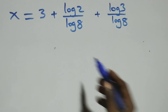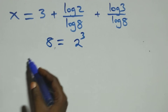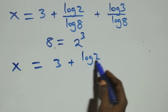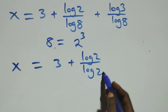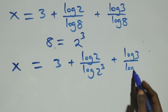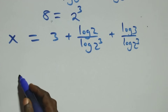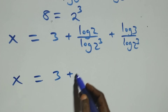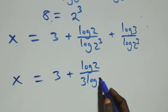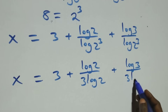Then, next step here, we can write 8 as 2 times 2 times 2, which is 2 cubed. And what we have becomes x equals 3 plus log 2 over log 2 cubed plus log 3 over log 2 cubed. Here we apply the power rule of logarithms, and we have x equals 3 plus log 2 over 3 log 2 plus log 3 over 3 log 2.